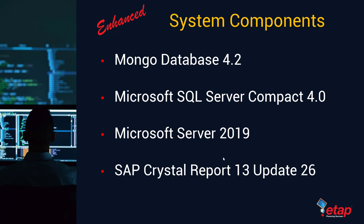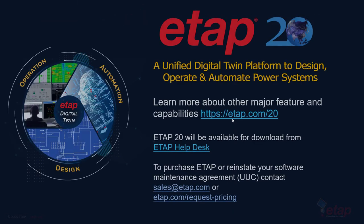In summary, ETAP20 is a massive step forward in design and operation of power systems. It has been based solely on customer feedback, industry demands, and the future of power system design and management. We're really excited to offer these groundbreaking features and capabilities, and we look forward to you exploring and learning more about other major features and capabilities on our website. ETAP20 will be available for download from ETAP Help Desk as usual. To purchase ETAP or reinstate your Software Maintenance Agreement or UUC, please contact sales at etap.com or go to our website and fill out the request pricing form. Thank you for attending this webinar, and we look forward to seeing you in future webinars on ETAP20 and other related products.